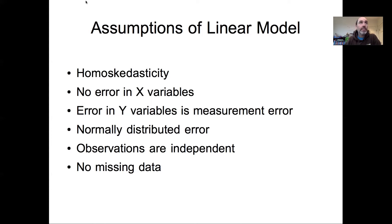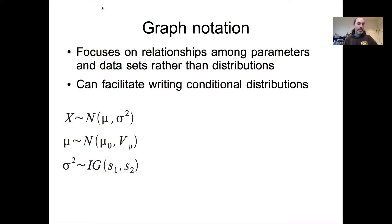Before diving into the details of these assumptions and how to relax them, I want to introduce graphical notation, which we'll use throughout the rest of the semester. This helps us understand what models are doing in a way that focuses on relationships among parameters and datasets, rather than getting bogged down in the details of the process model and data model. This can also help us understand model structure and write down conditional distributions, for example when doing Gibbs sampling.